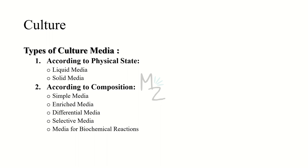We've already discussed differential and selective media. An example of differential media is MacConkey medium, and an example of selective media is Lowenstein-Jensen medium. The fourth type is media for biochemical reactions, used to detect different biochemical reactions produced by different organisms — for example, Simon's citrate medium.